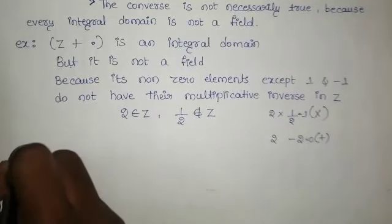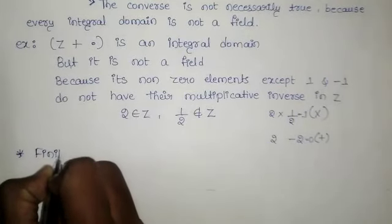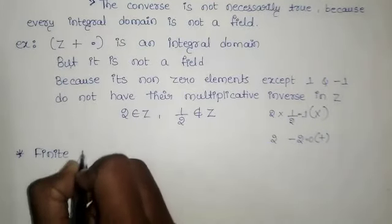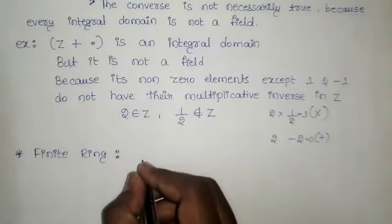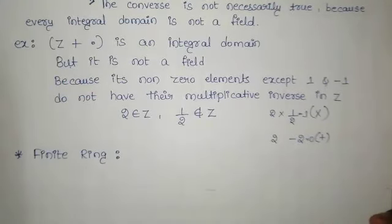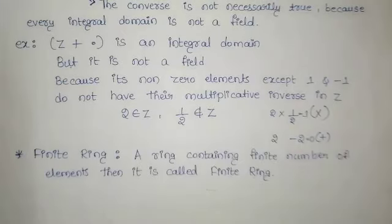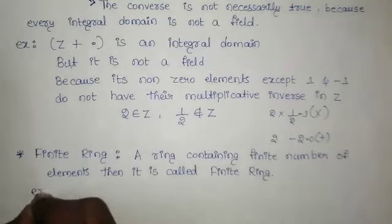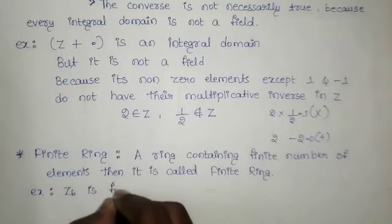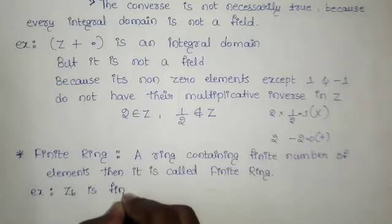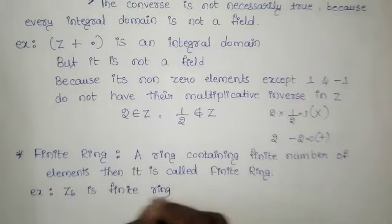Next consider another definition: finite ring. What do you mean by finite ring? A ring containing a finite number of elements is known as a finite ring. For example, Z₆ is a finite ring.